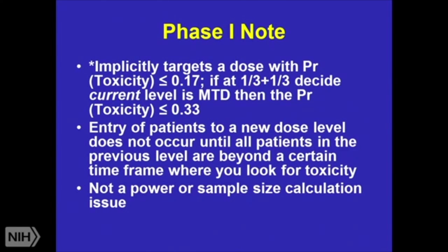Those stars in the previous table mean you're implicitly targeting a dose with a probability of toxicity less than or equal to 17%. But if you look at 2 out of 6, you're saying you're willing to have an MTD with a probability of toxicity around 33%. Key point in these trials: patients do not go onto the next dose level until all patients at the previous dose level are beyond the timeframe where you plan to look for toxicity. You have to finish following them, clean their data, analyze their data, and make a decision — do we escalate? If you do not have the data to decide, you cannot ethically escalate.